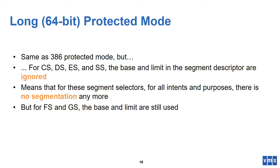The protection bits are still used. What you would see in an operating system is a code descriptor for kernel mode and one for user mode in your GDT, plus a data descriptor for kernel mode and one for user mode — four segment descriptors in total that you switch between as you go from user to kernel mode and vice versa.